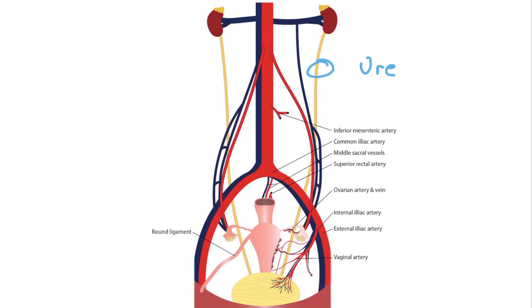The ureter travels down to the bladder, and we have one on each side. If the surgeon is trying to remove the ovary, he or she will ligate the ovarian artery and vein. In so doing, he or she can accidentally ligate the ureter, which can be devastating.